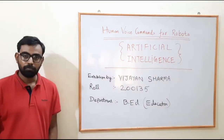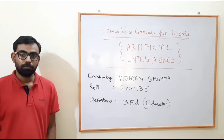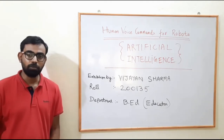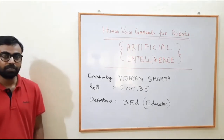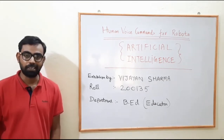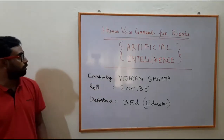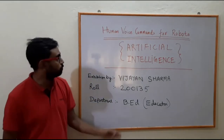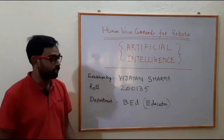Hello everyone, my name is Vijayan Sharma and I am from the School of Education, B8 course bearing roll number 200135. For this exhibition in Science and Technology, I would like to present a robotic model based on Artificial Intelligence. The topic of my model is human voice control for robots using Artificial Intelligence.